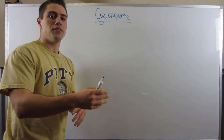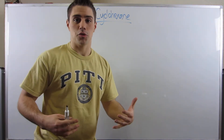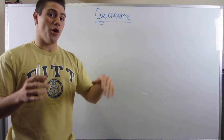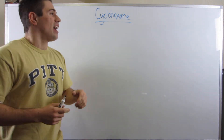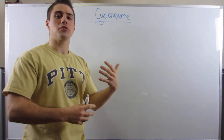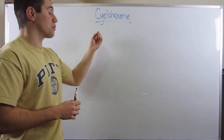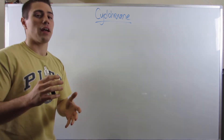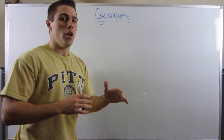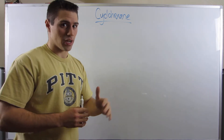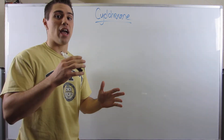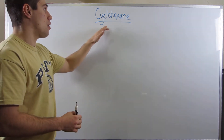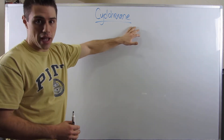Now that we've done the type of energy analysis we did with Newman projections for straight line structures, we can do a similar type of energy analysis with cyclical structures, namely cyclohexane. But we have to do it in a slightly different way — we're not exactly using Newman projections. First, I want to talk about why we're going to only do it with cyclohexane.